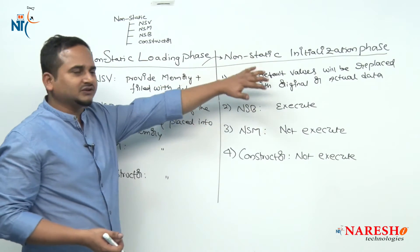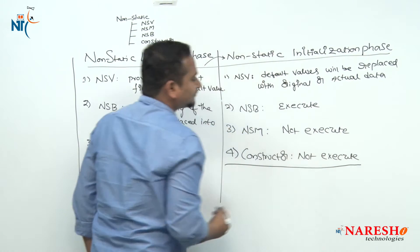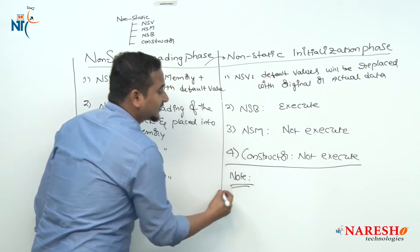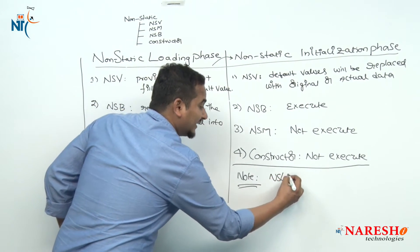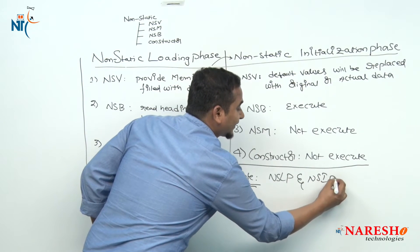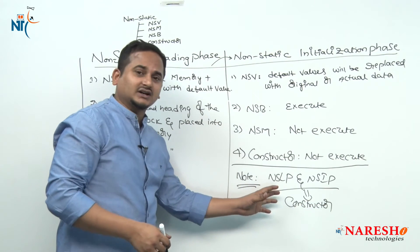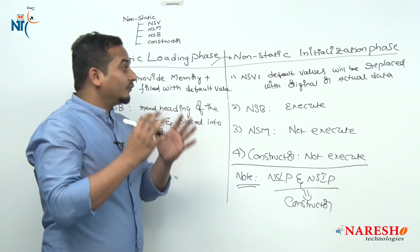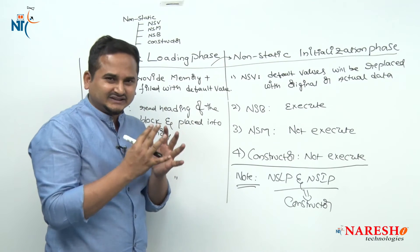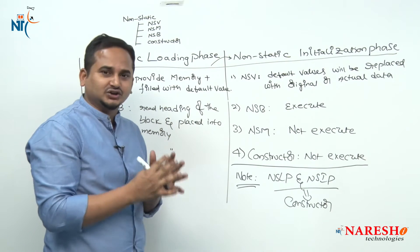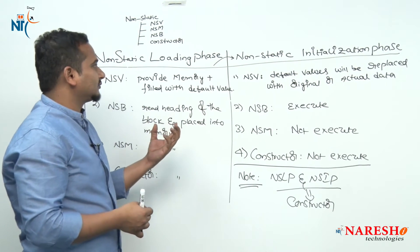Once the initialization phase is successfully completed, automatically control goes to the constructor. After successfully completing both the non-static loading phase and non-static initialization phase, control goes finally to the constructor. Once the constructor is executed successfully, we can say that the object is successfully created and initialized.